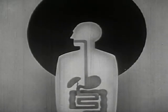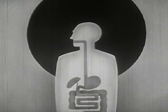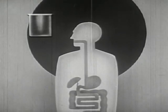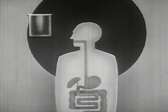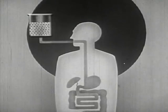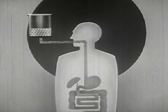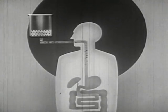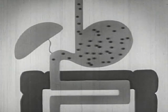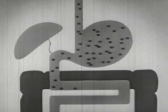By using animated drawings, we will see what happens to alcohol in the body. In the alcoholic beverage shown here, the black dots represent the ethyl alcohol — the alcohol content. The alcohol travels down the esophagus and into the stomach and the small intestine.